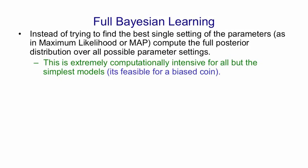It's extremely computationally intensive to compute this for all but the simplest models. So in the example earlier, we did it for a biased coin which just has one parameter, which is how biased it is. But in general, for a neural net, it's impossible.